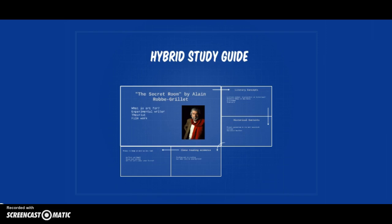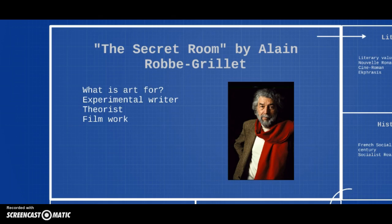Welcome students to the hybrid material for Alain Robbe-Grillet, The Secret Room. This is our shortest reading of the semester, so you'll see at the end of our talk today I'm going to ask you to possibly read this more than once. It's also one of the strangest things that we're going to read all semester, so I hope that you'll find some kind of enjoyment in it.